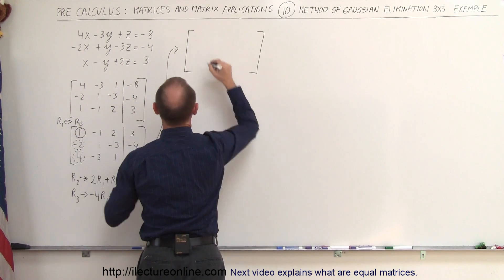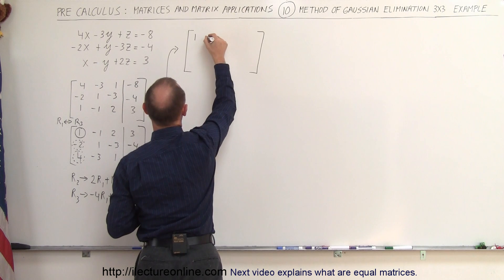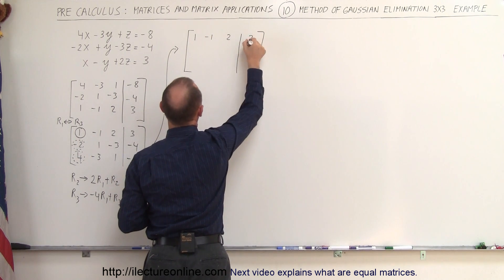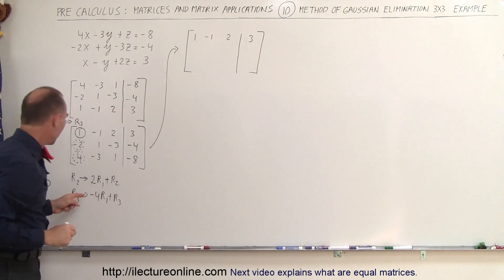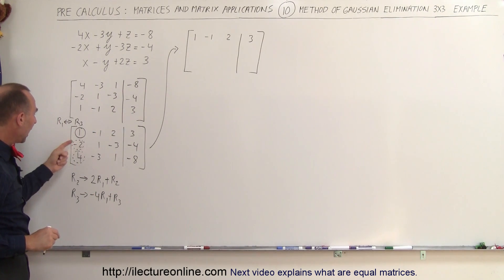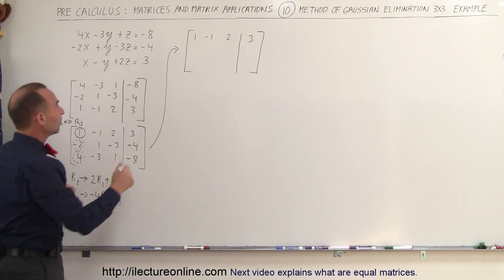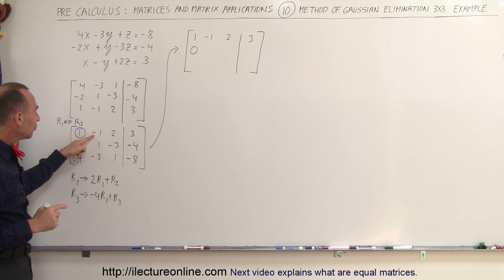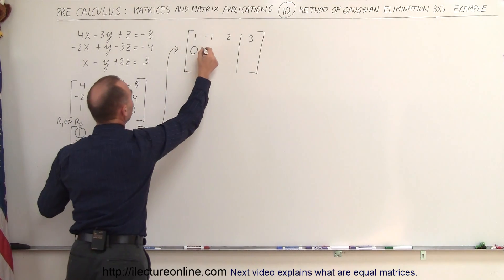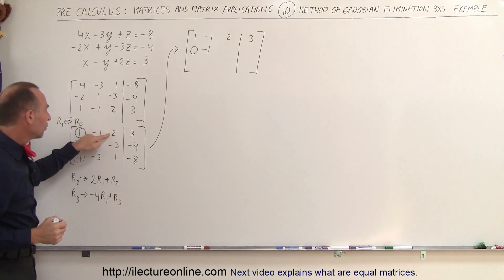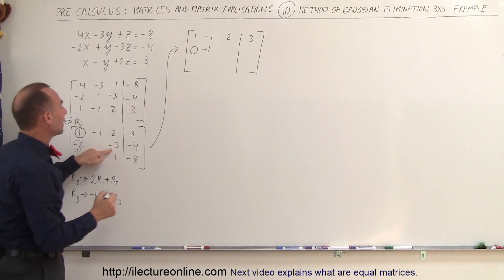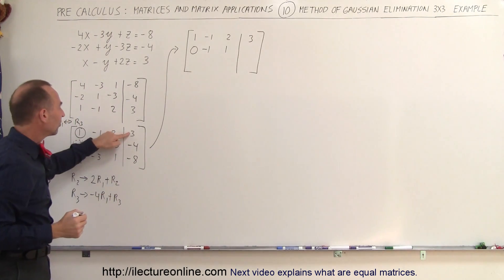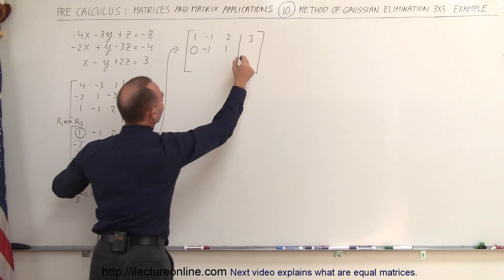The first row does not change — we have a 1, a negative 1, a 2, and a 3. For the second row: 2 times 1 is 2, added to negative 2 gives 0. 2 times negative 1 is negative 2, added to 1 gives negative 1. 2 times 2 is 4, added to negative 3 gives positive 1. And 2 times 3 is 6, added to negative 4 gives positive 2.